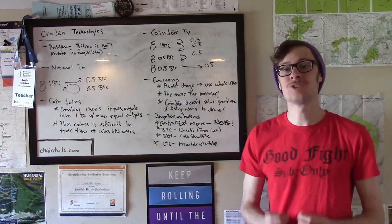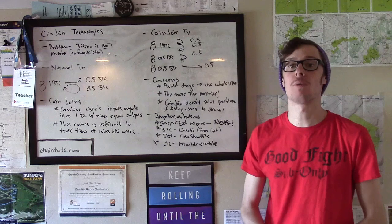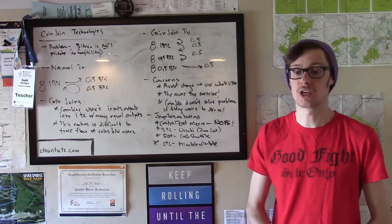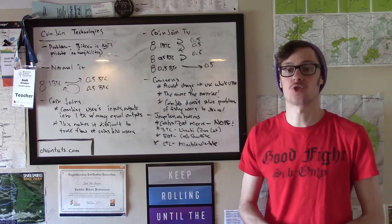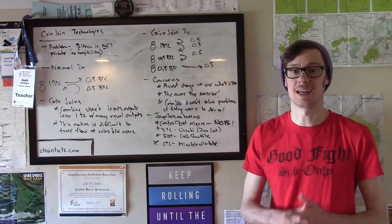So CoinJoins can be used to help obscure the flow of funds between users and make it less possible to track who is sending what.